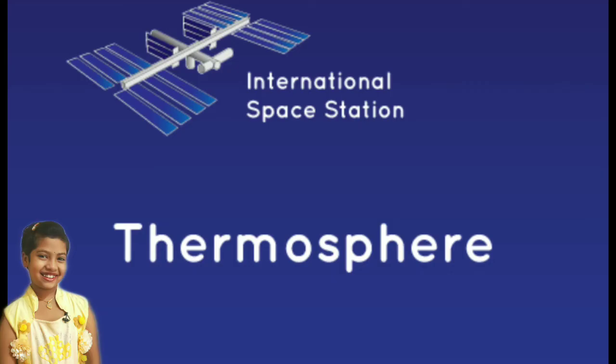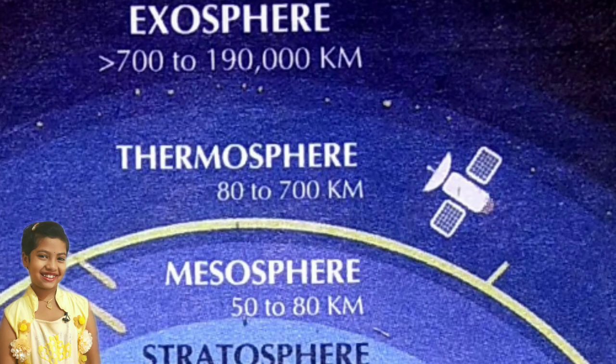Thermosphere. Thermosphere is the fourth layer of the atmosphere. Space shuttles orbit in this layer.